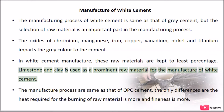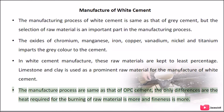Limestone and clay are used as prominent raw materials for the manufacture of white cement. The manufacturing process is the same as that of OPC cement, but the only differences are that the heat required for burning the raw material is more and the fineness is more.